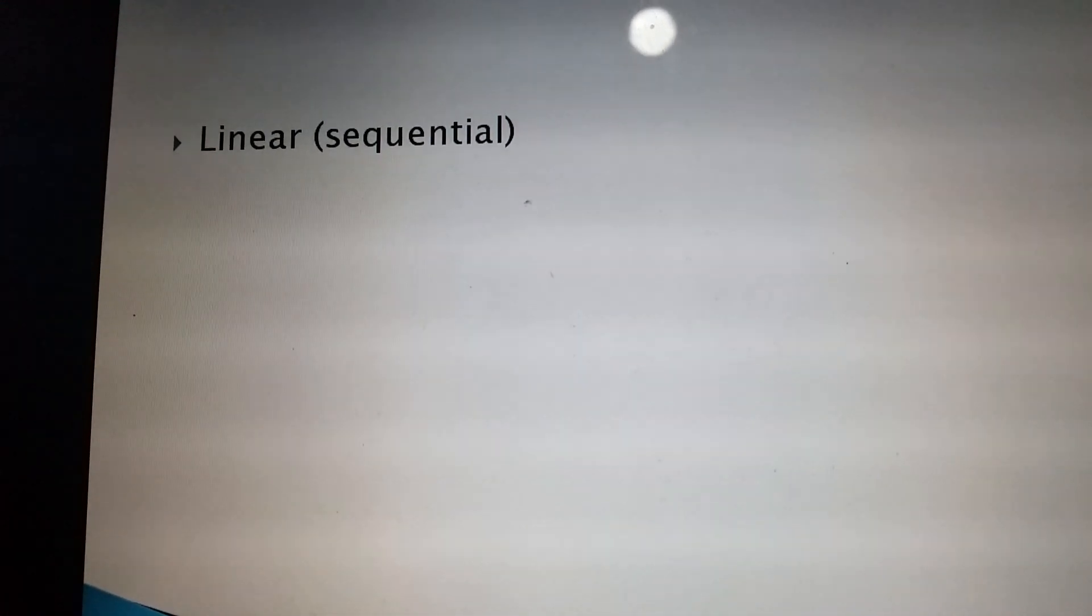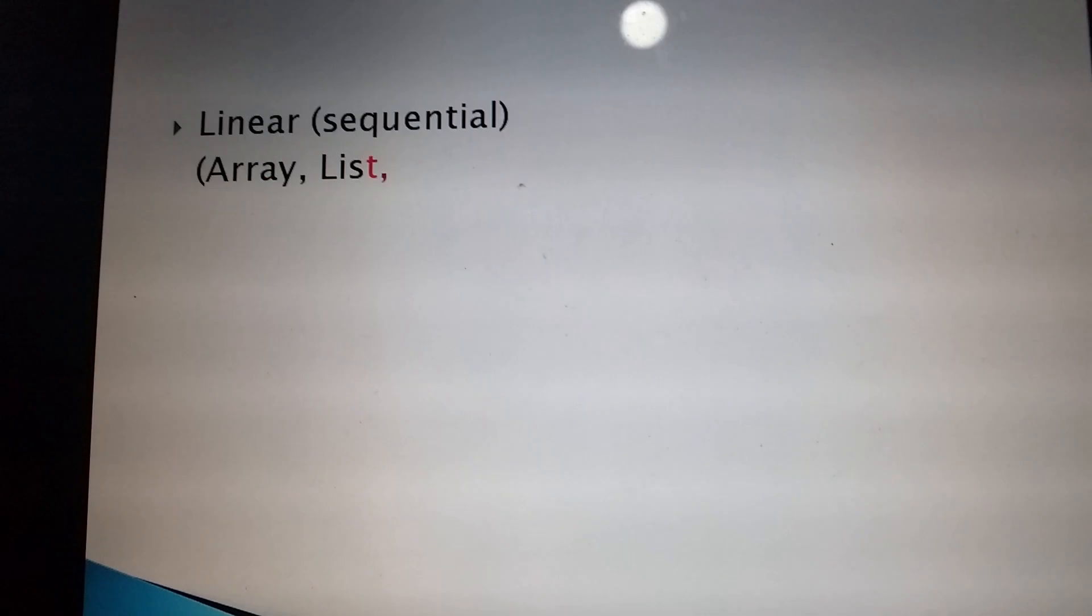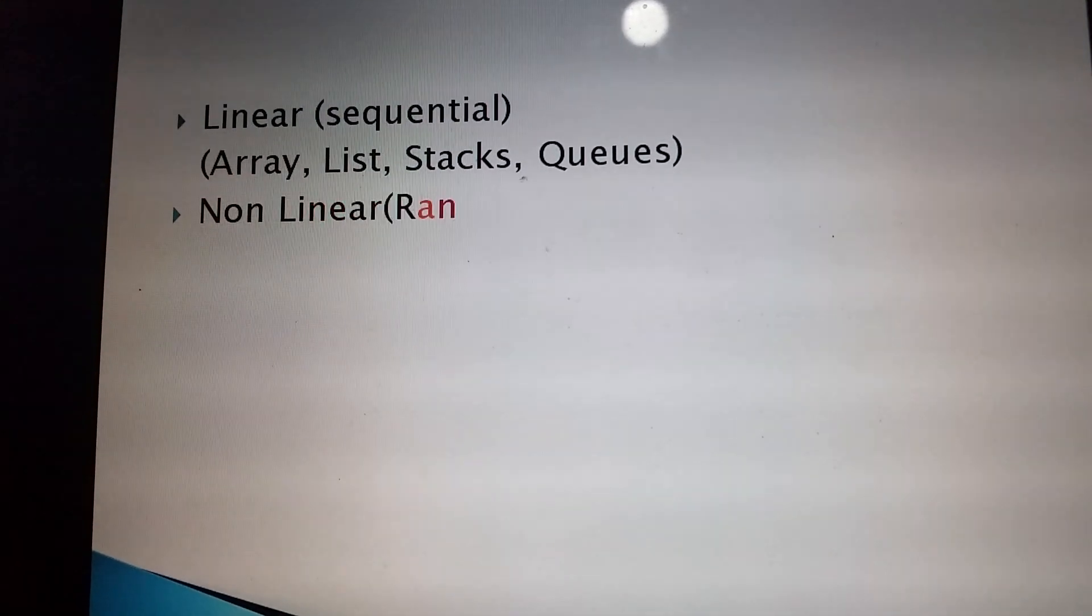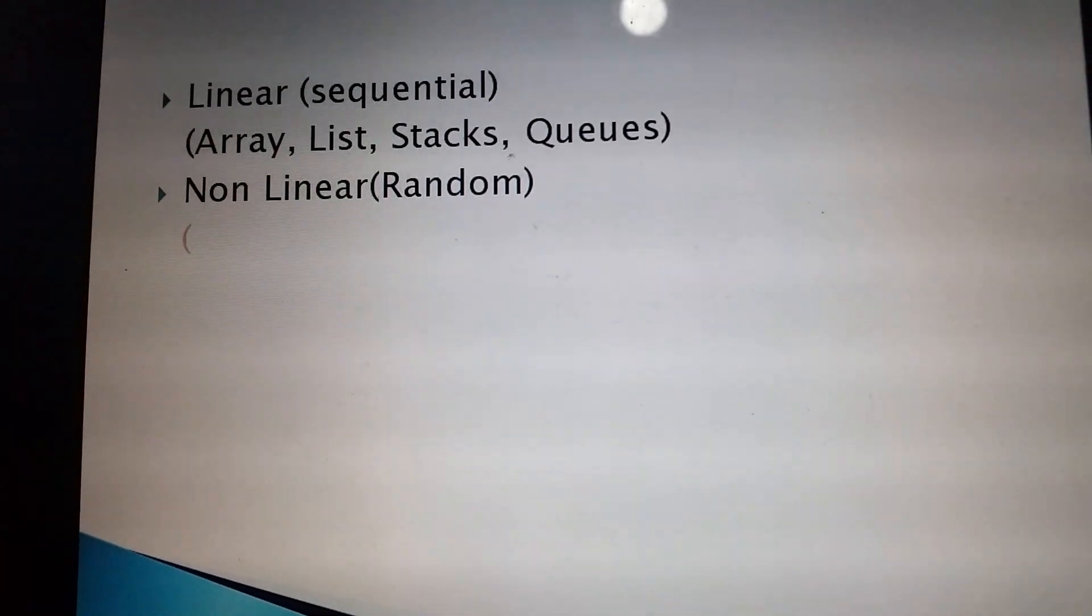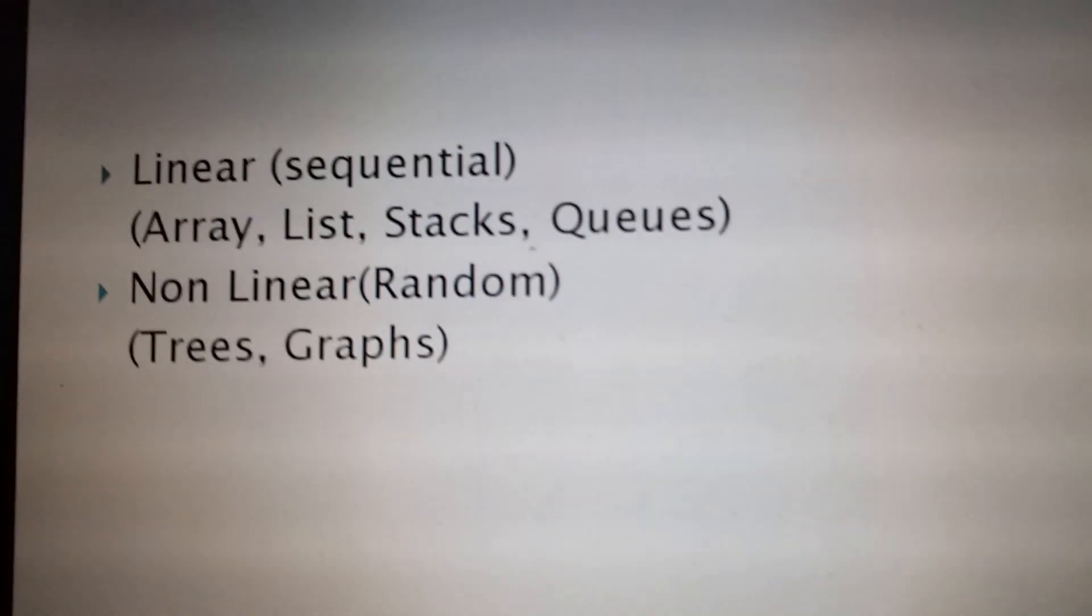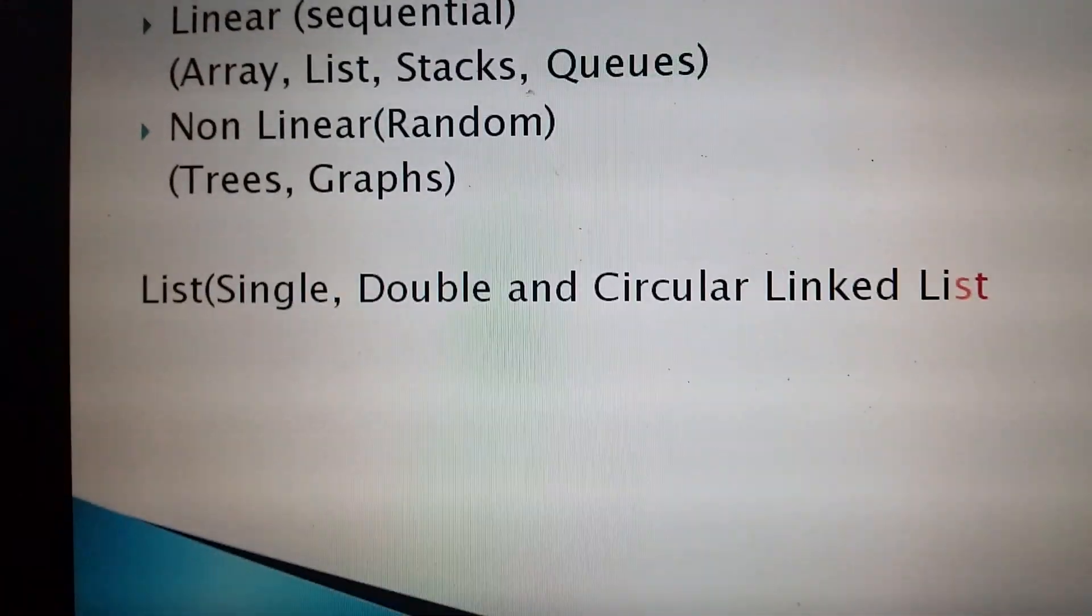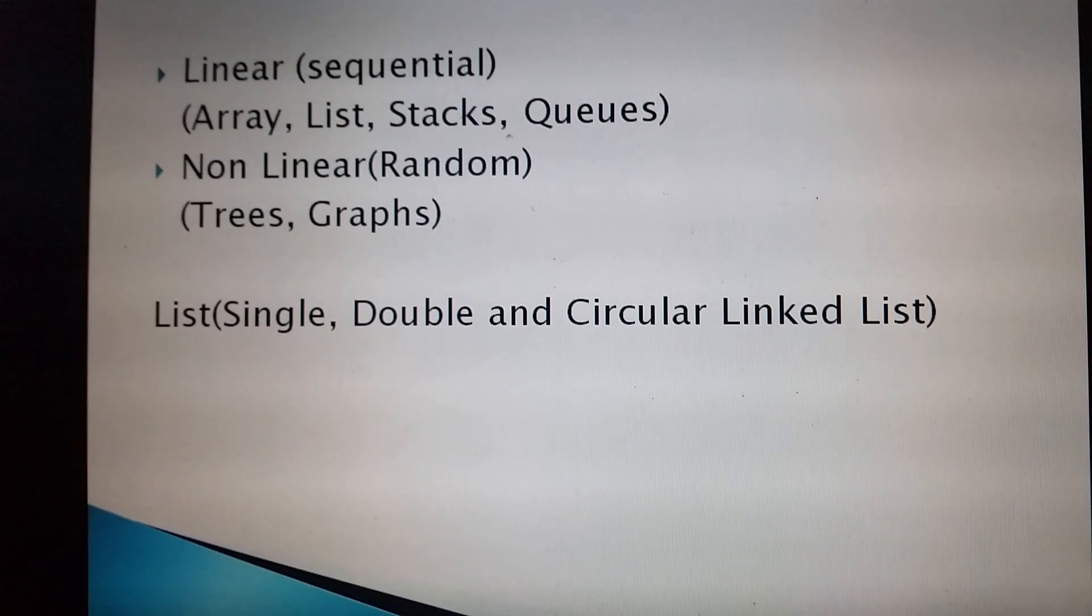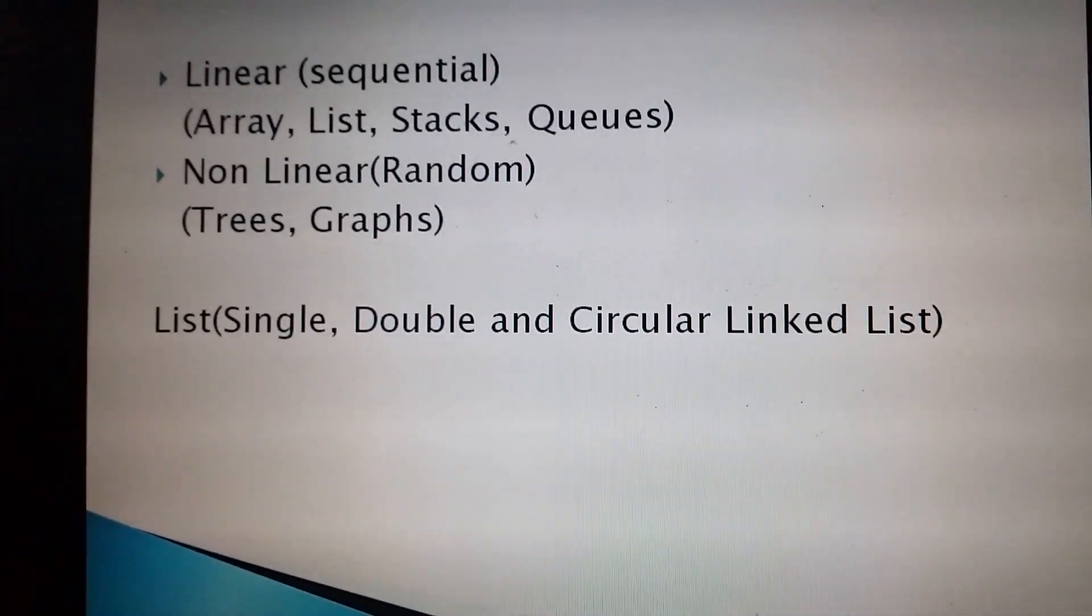When we say linear, it means sequential. Examples are array, list, stacks, and queues. Non-linear means random. Examples are trees and graphs. List examples are single, double, and circular linking.